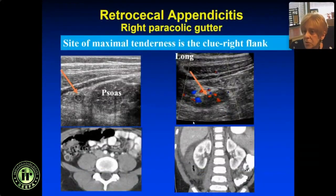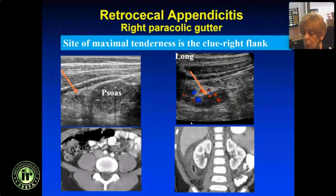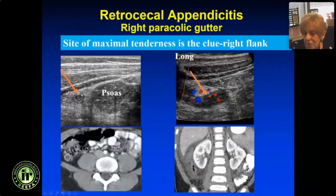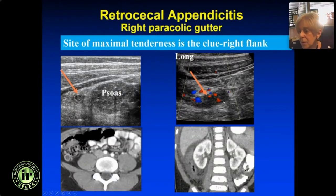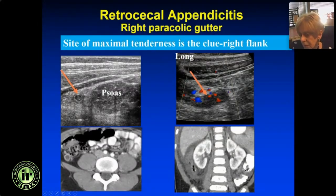Occasionally the appendix is in the right pericolic gutter — retrocecal. That's why we always ask at the start of the exam: point with one finger, where do you hurt? If they point to the flank, look in the flank. Here's the psoas and here's the appendix; normally it would be in front of the vessels, medial to the psoas, but this one is retrocecal. Here's the CT for correlation. Here's another case where the patient pointed to mid-right flank — this is the appendix with inflamed omentum retrocecal.